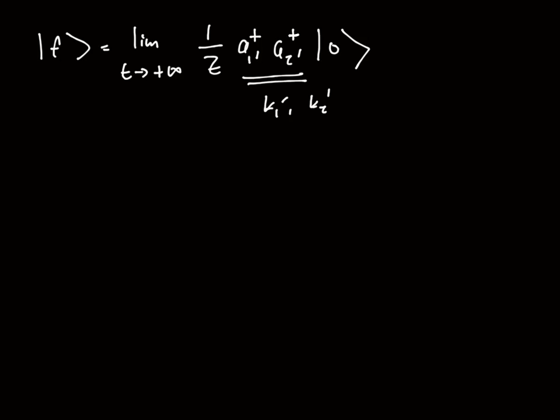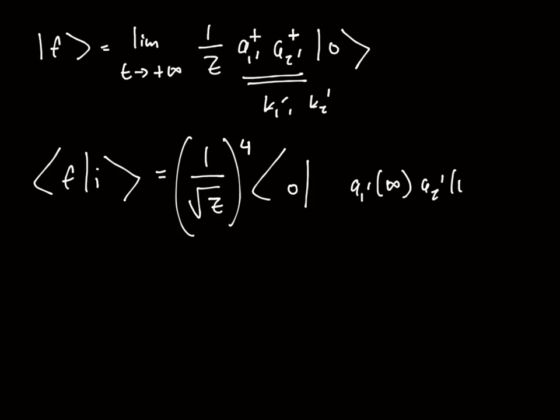Now the amplitude that we are looking for: we are looking for the probability that the initial state of two particles with momenta k₁ and k₂ turns into this final state of two particles with momenta k₁' and k₂'. So we are looking for an expression for the following inner product, just ⟨f|i⟩. In other words, it's the following object: 1 over root z to the fourth, vacuum times a₁' of infinity, a₂' of infinity.